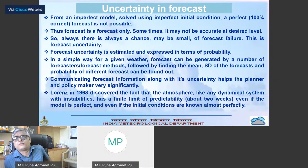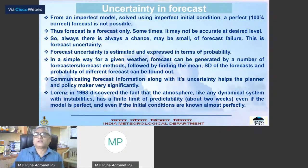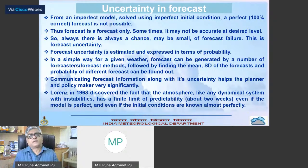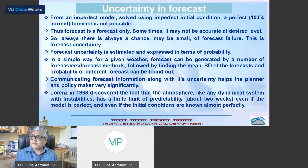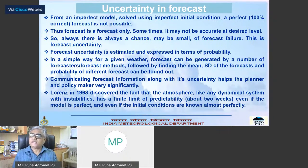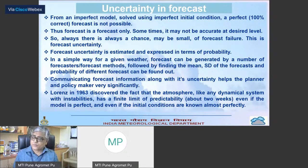Always there is a chance — maybe small — of forecast failure. Forecast failure means forecast error beyond the tolerance limit. This is our forecast uncertainty. Forecast uncertainty is estimated and expressed in terms of probability. One thing is very clear: for a given weather phenomenon, at a given time, at a given place, using a given initial condition and a given model, I cannot expect more than one forecast — I will have only one forecast. That forecast is called a deterministic forecast. We cannot do any statistics on that — it is not possible.